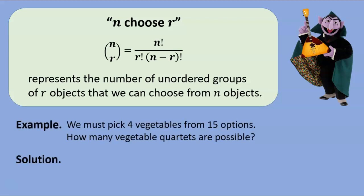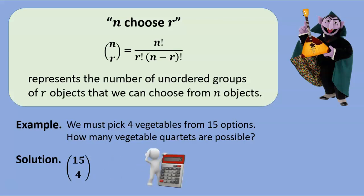For example, suppose we must pick four vegetables from fifteen options — how many vegetable quartets are possible? Now that we have the combinatorial language of n choose r, we don't have to work this out from scratch. We want to choose an unordered group of four from fifteen, so the answer is 15 choose 4. According to our formula, that's 15! / (4! × 11!). Working it out on a calculator gives one thousand three hundred and sixty-five groups of four vegetables.